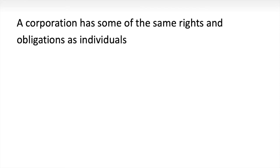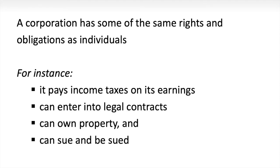Some say a corporation is a person — that's not quite true. Corporations can't have children, can't get married, and can't go to jail. But corporations do have some rights that individuals have: they pay taxes, can enter into contracts, can own property, and can sue and be sued. We call this an entity — a corporation is a separate entity. You sue a corporation, not necessarily its owners. The corporation pays its own taxes; the owners don't incur a tax until they receive a dividend. All of this means we have to account for them separately.